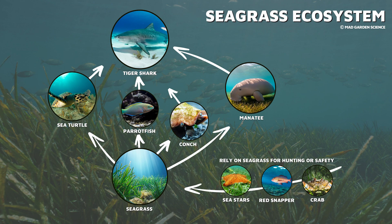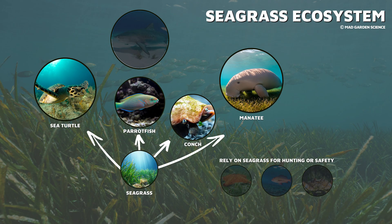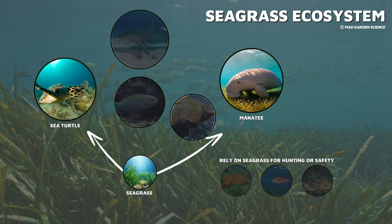Remove a keystone predator and the population of organisms it once hunted can explode, pushing out other organisms and reducing species diversity. This domino effect is known as a trophic cascade.